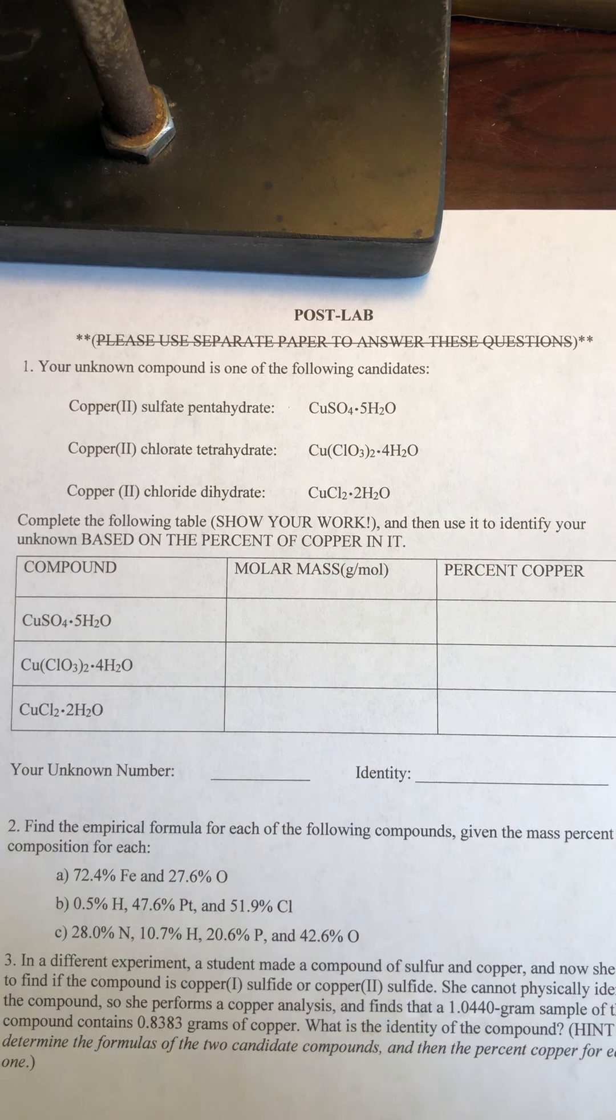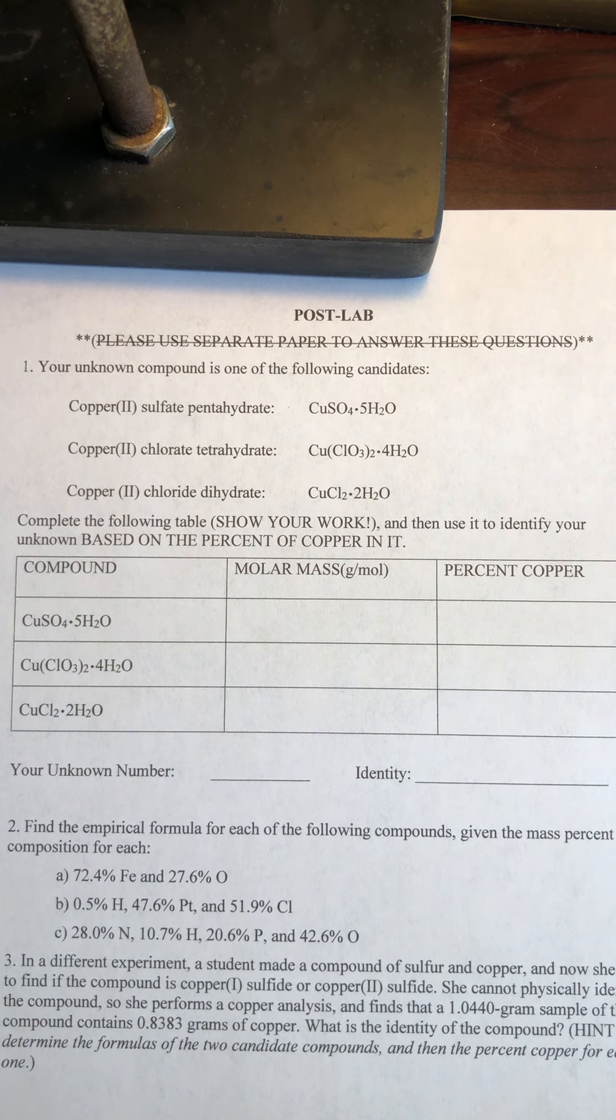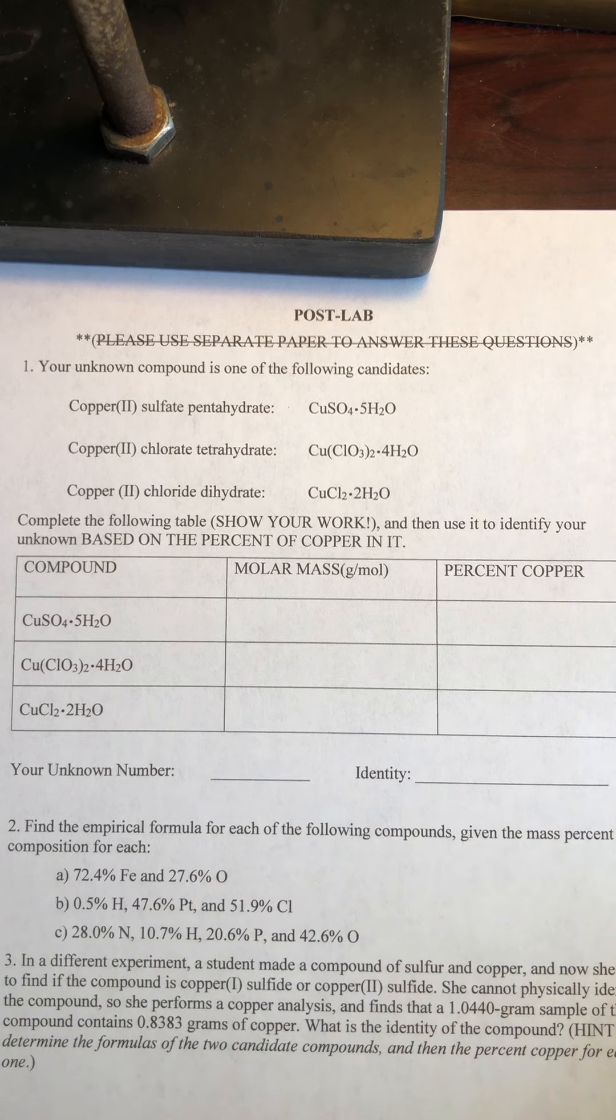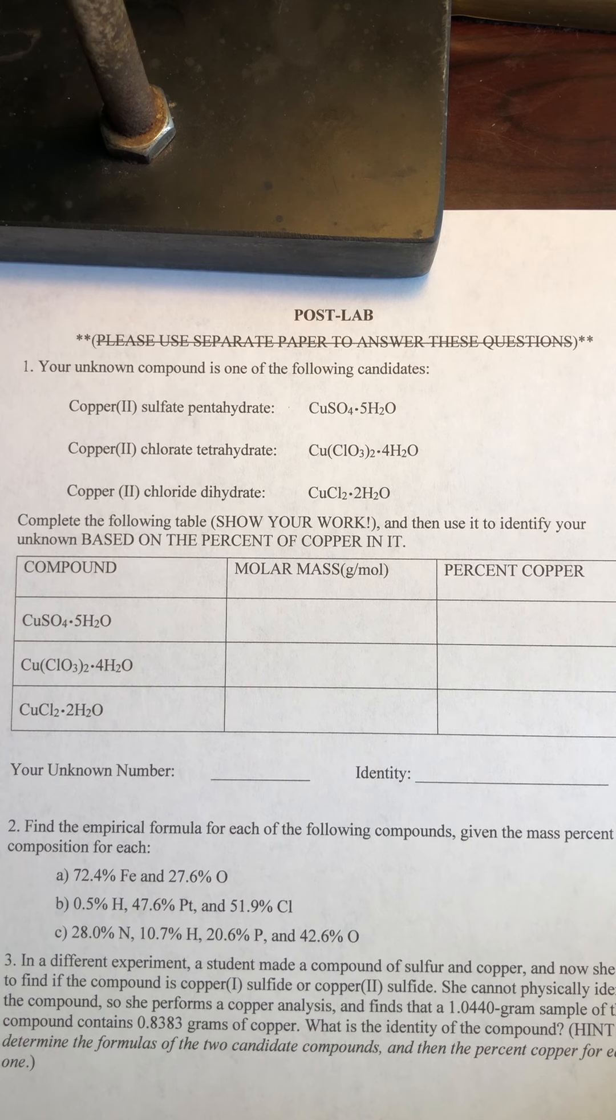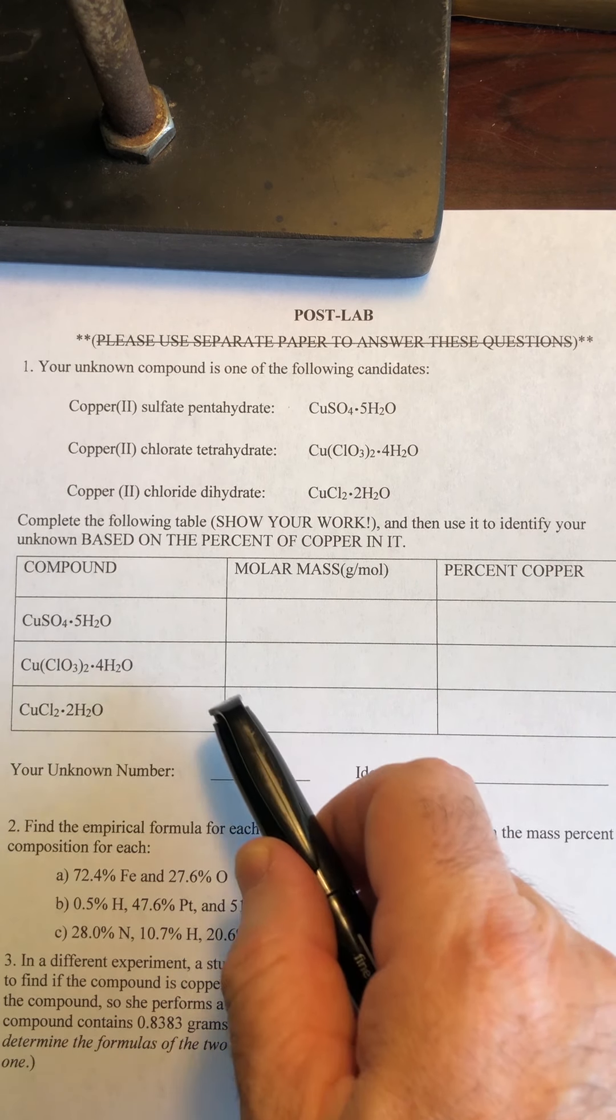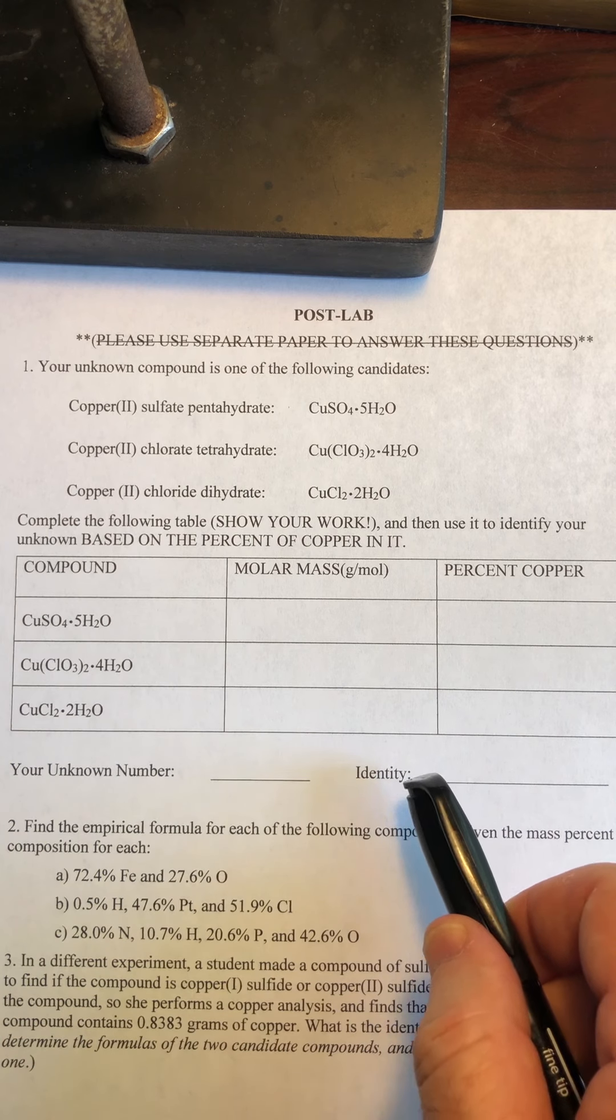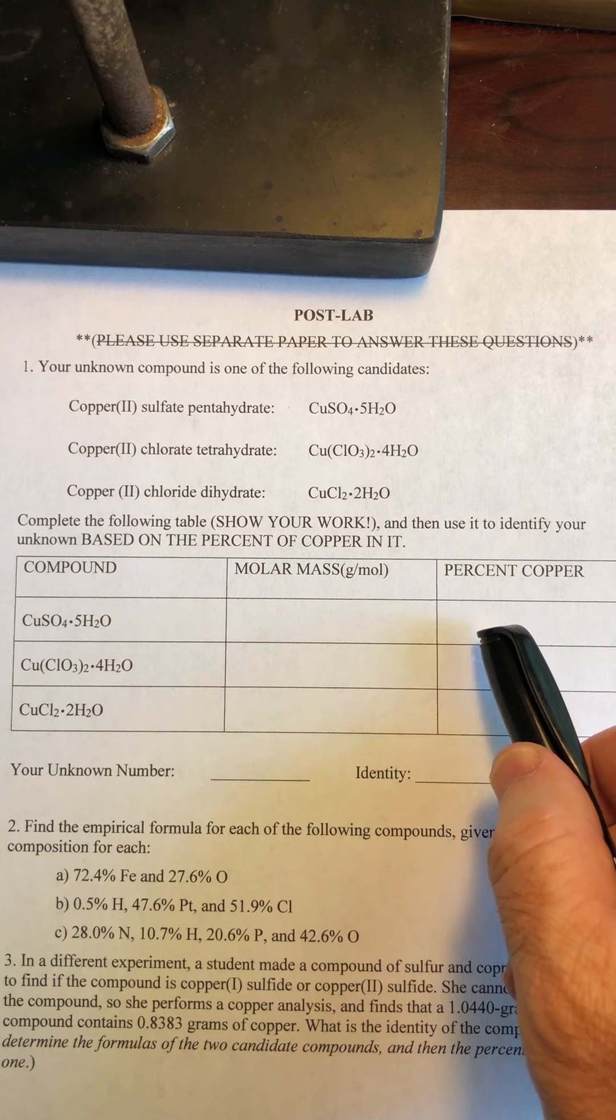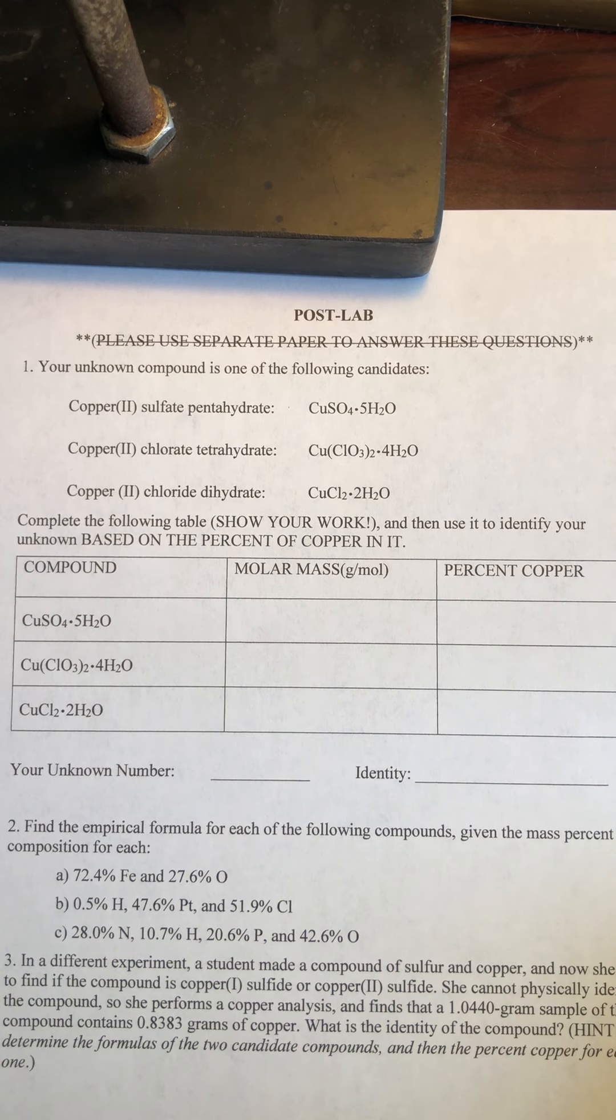Now, your candidates are in here. And the idea now is, based on your unknown's percent copper, which of these compounds has a similar percent copper, and therefore a good candidate for the identity of our unknown? To do this, we have to show our work, like it says here. So, to find which of these guys is our possible candidate, we're going to have to determine what is the percent of copper in each one of them.